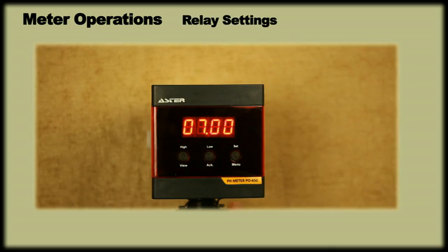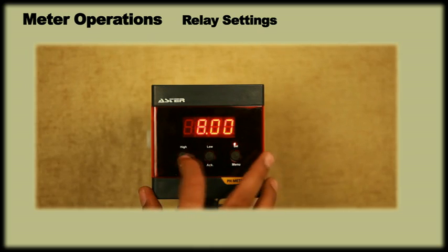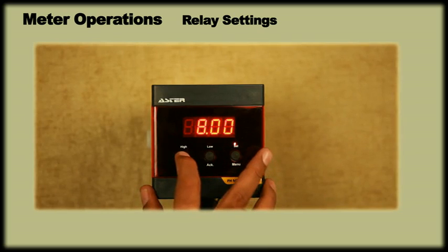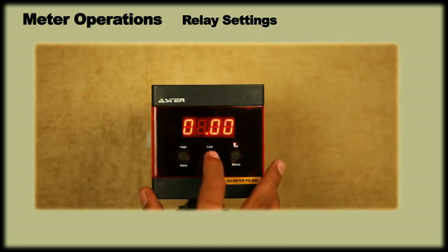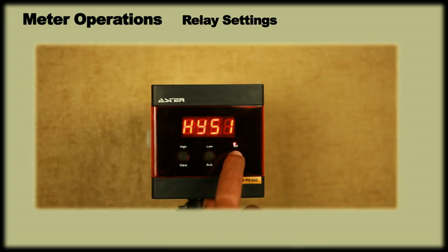How to program set point of pH: Once we press the menu key, it will show set high. Press the menu key, the display will show a previously set high pH value. Using ACK key and view key, we can set the required high pH value. For example, let us set high pH value as 9.00 and press menu to enter. The display will now show hysteresis 1.